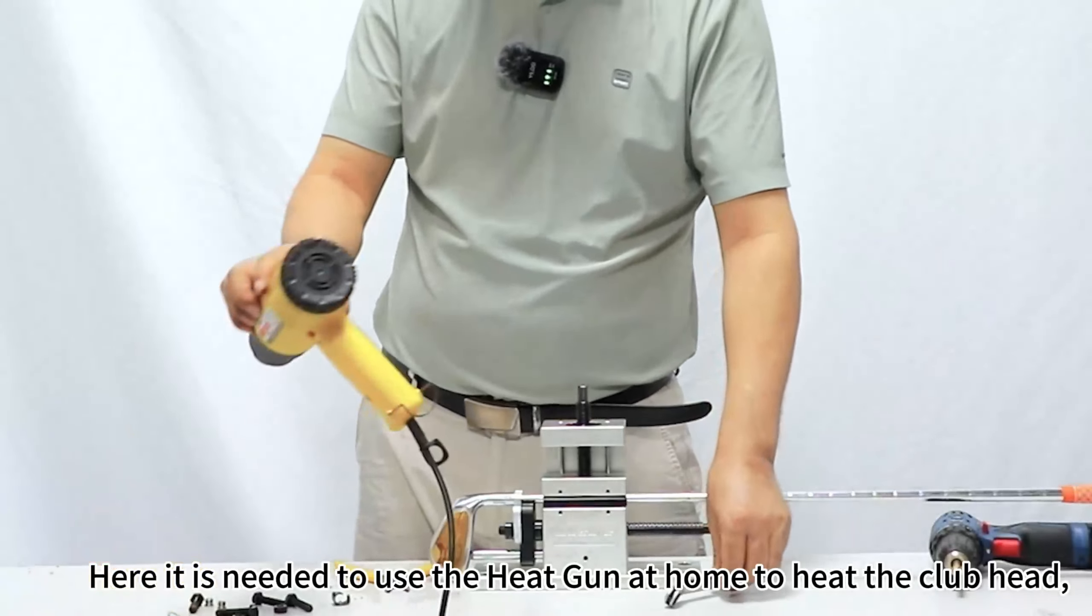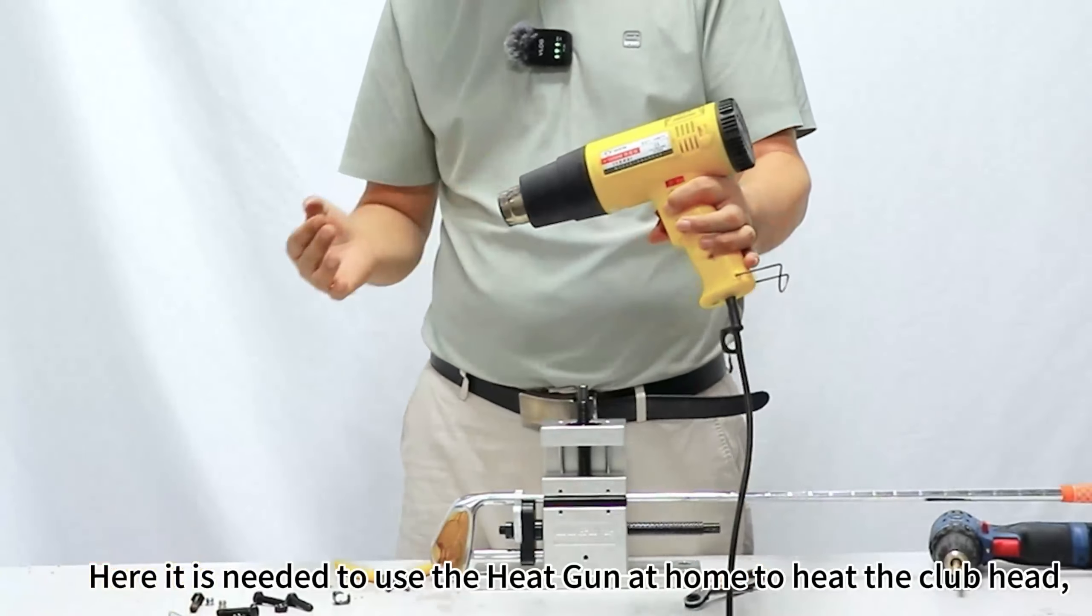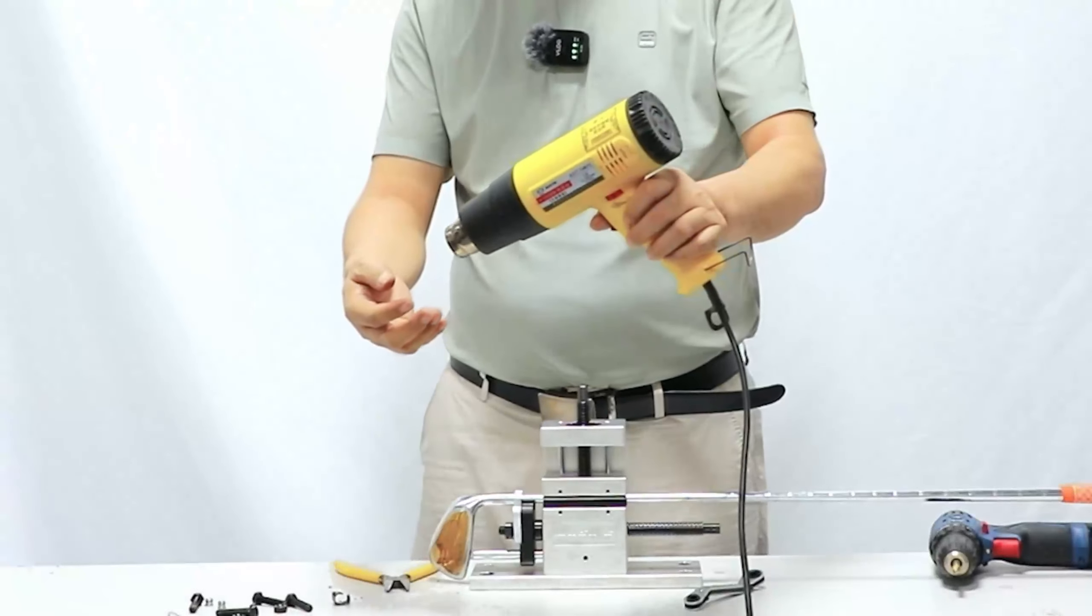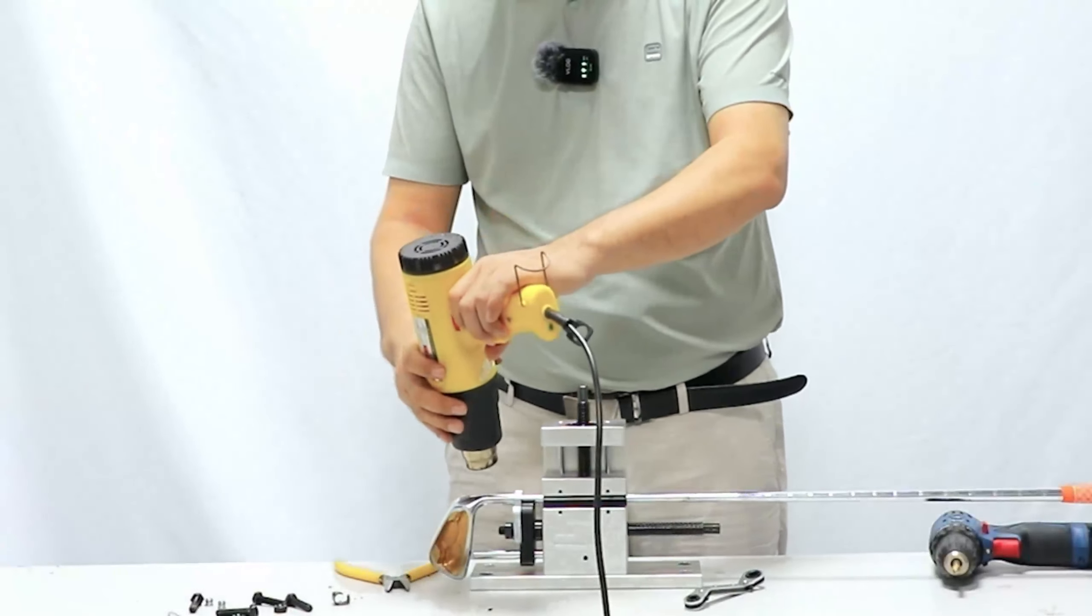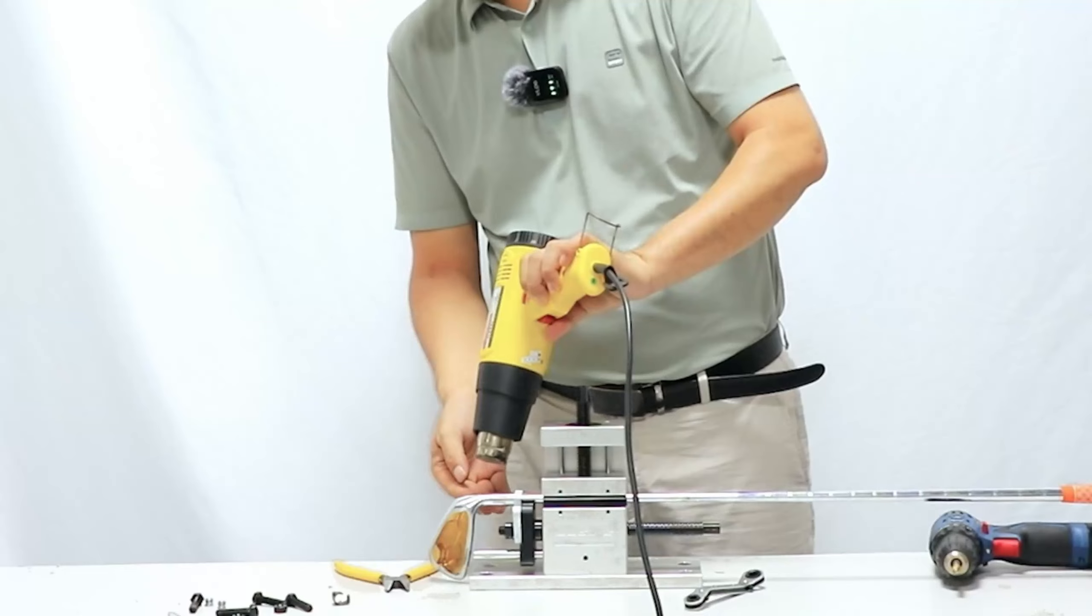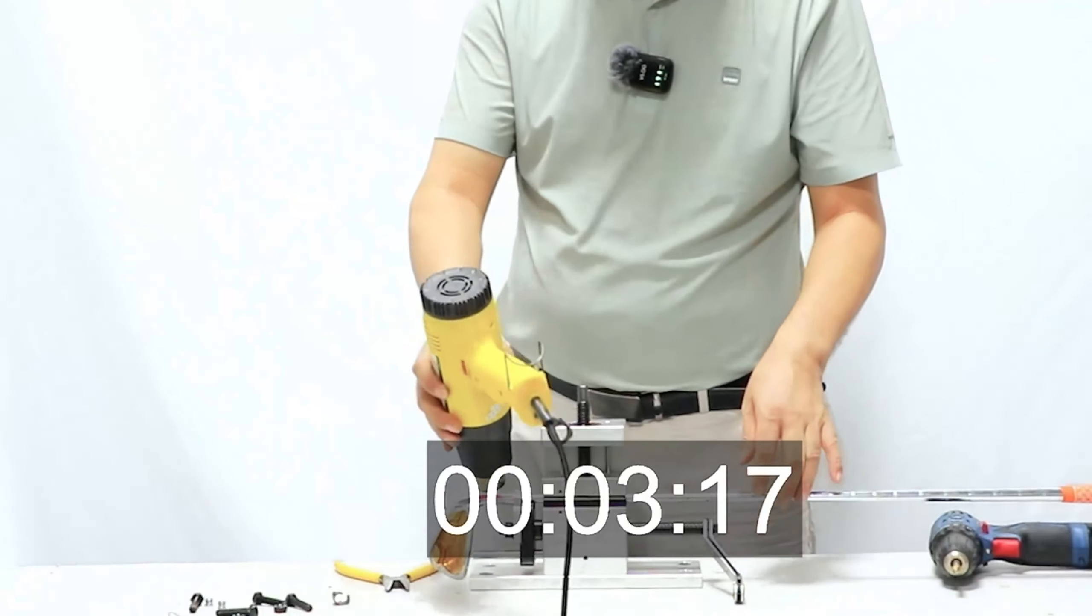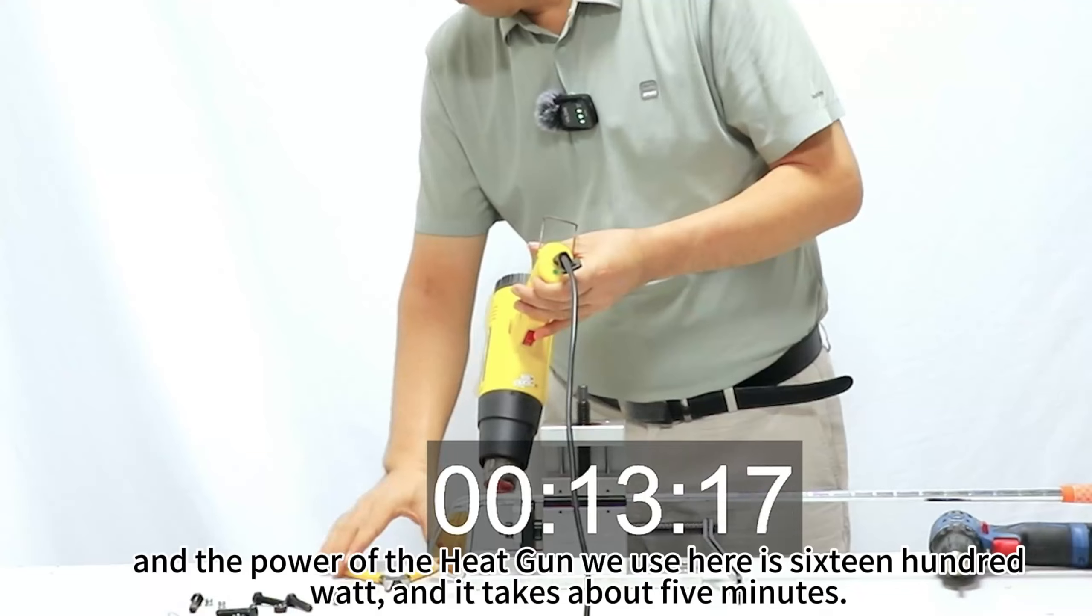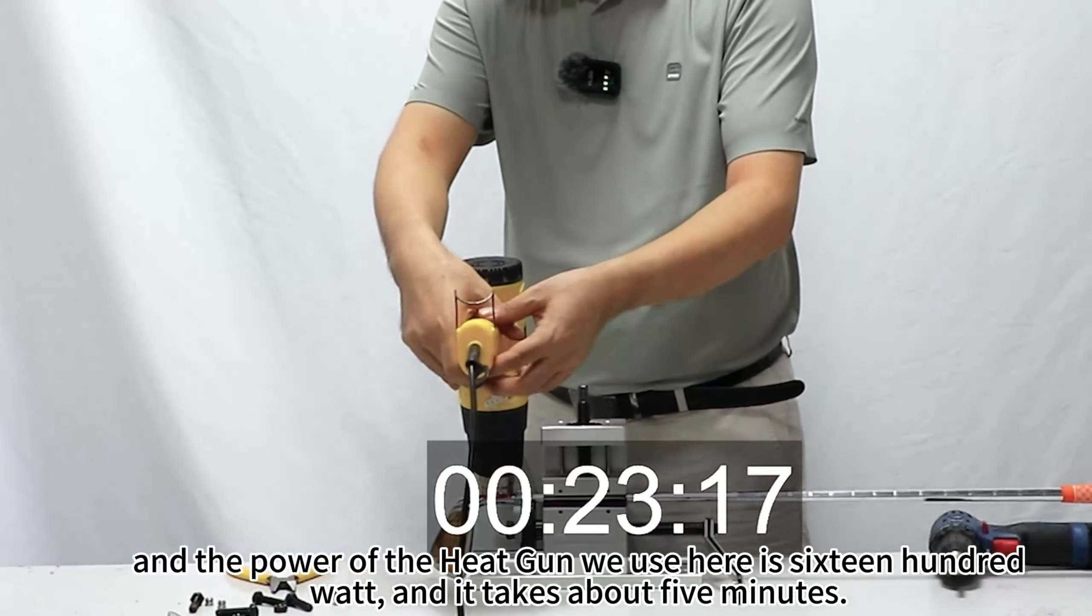Here it is needed to use the heat gun at home to heat the club head. And the power of the heat gun we use here is 1600 Watt, and it takes about five minutes.